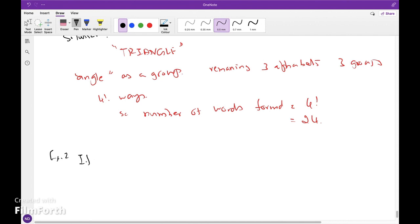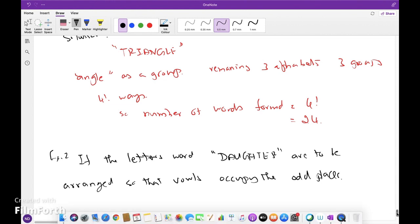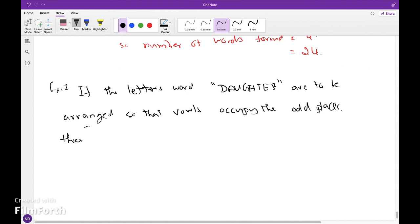If the letters of the word DAUGHTER are to be arranged so that vowels occupy the odd places, then find the number of different words formed. Solution: